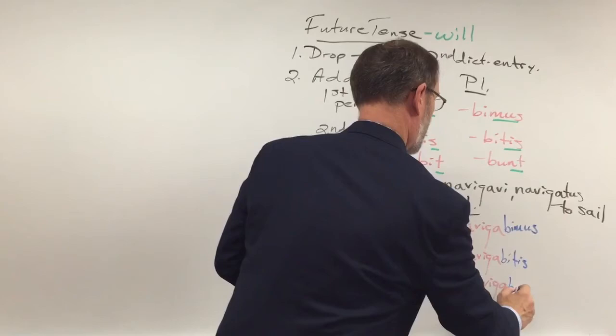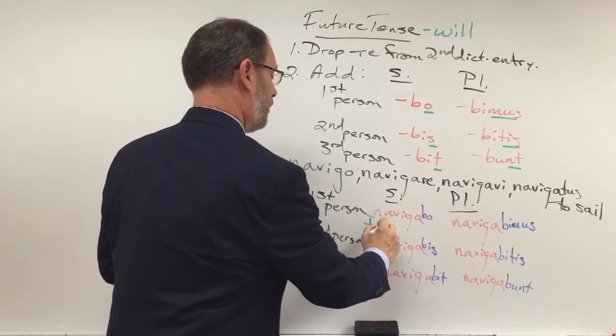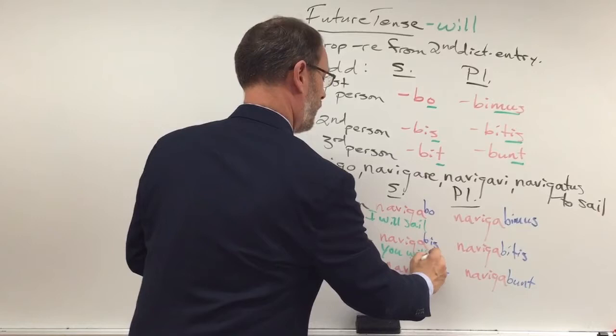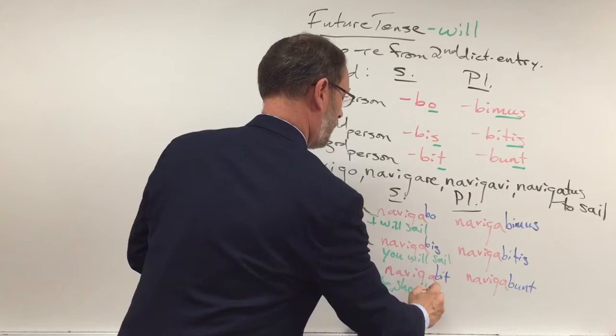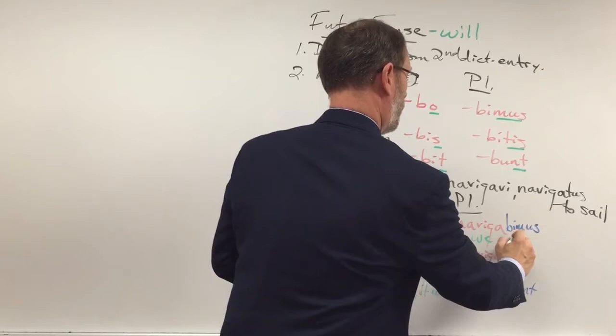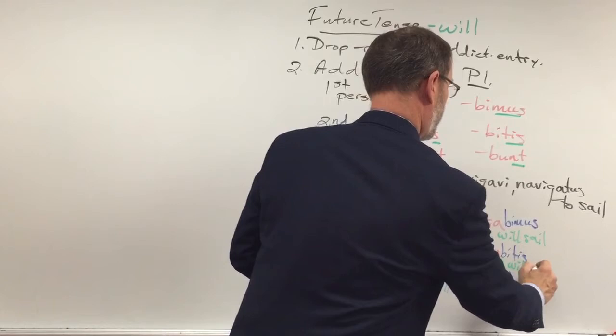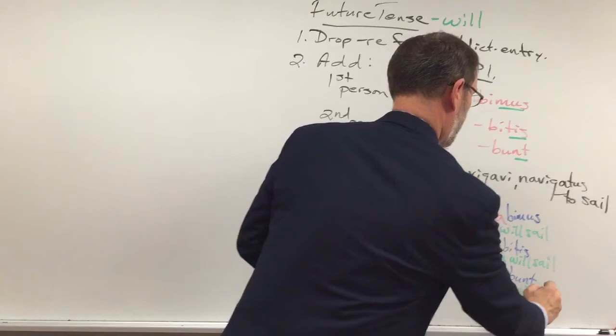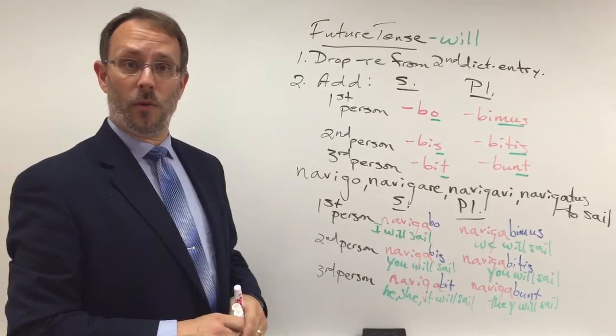In English: I will sail, you will sail, he/she/it will sail, we will sail, you will sail, and they will sail. That's how you would conjugate that verb in the first conjugation. Let's see this in an actual sentence.